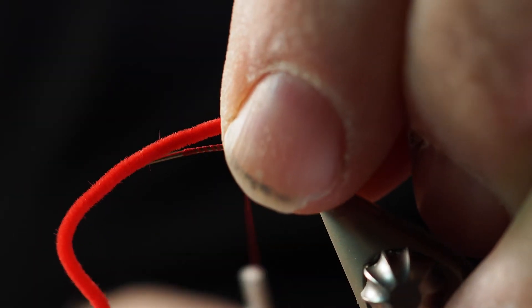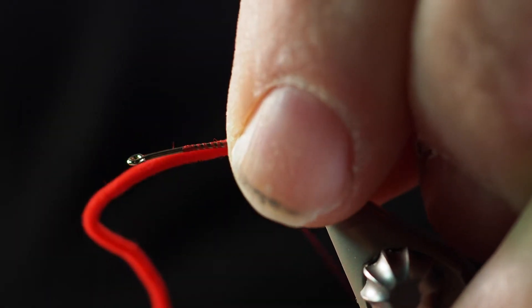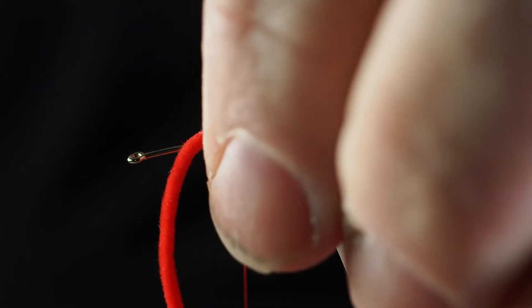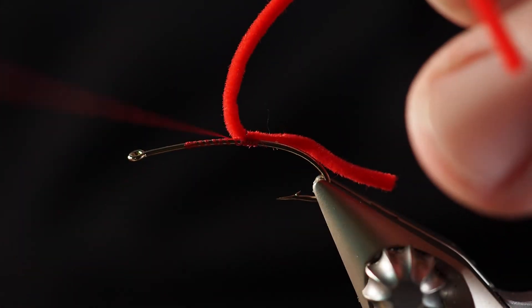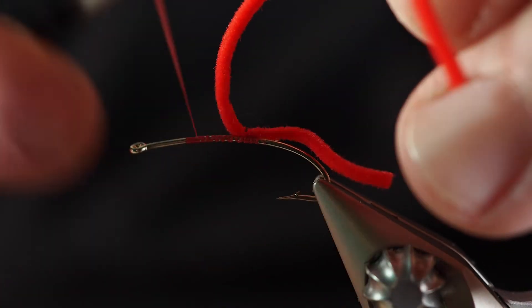So now that I've got my thread on here, I'm just going to take a wrap or two around that chenille so I can keep it on top of the hook like so. And then I'm going to lift this back and we're going to tie a few more wraps here on the front side of the hook.